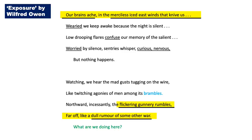When Owen discusses the 'dull rumour of some other war,' it could reflect how the soldiers are so weary and jaded by both the weather and war that they feel completely detached from it, hence the 'dull rumour.' This is also a biblical reference from the Gospel of Matthew, which states 'you will hear of wars and rumours of wars.' This may reflect Owen's previous religious beliefs — we know he, like many others, questioned his faith as a result of the suffering he experienced. We end the second stanza with a rhetorical question that directly questions why the soldiers are there, and in turn, what is the point of anyone going to war.